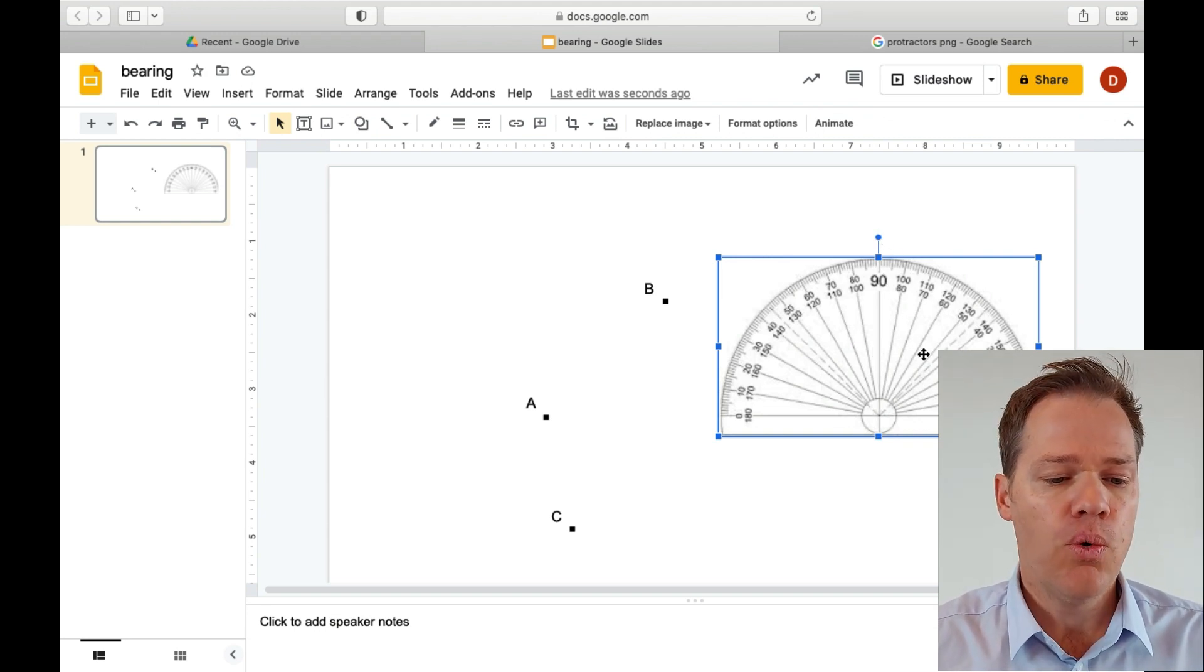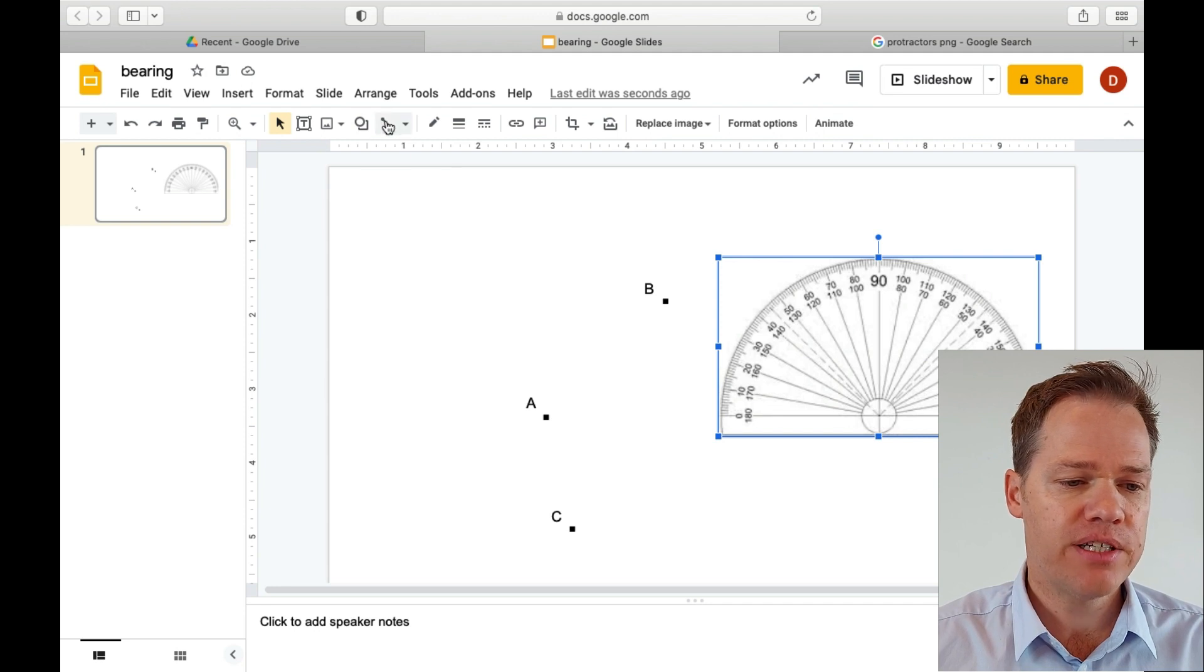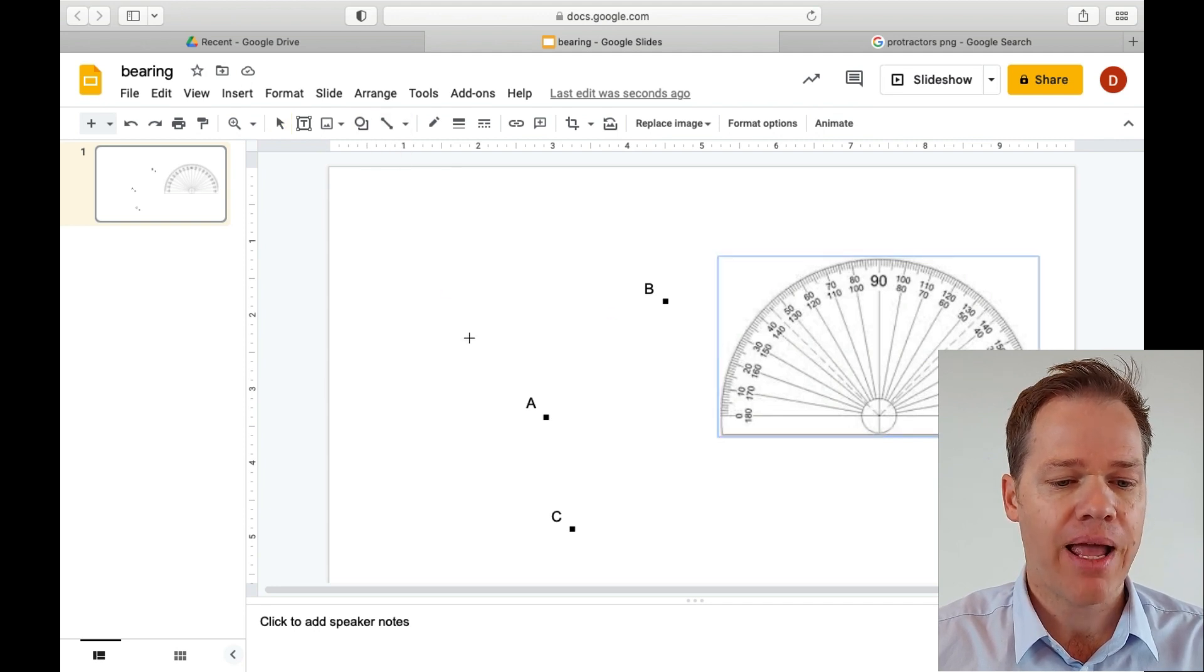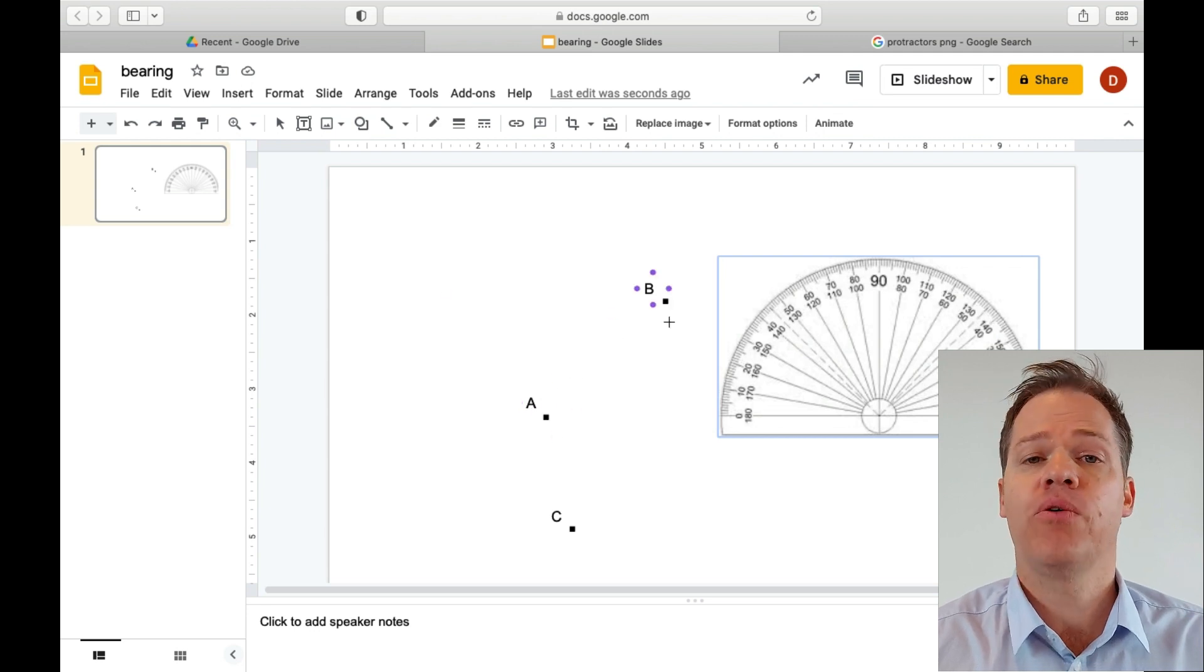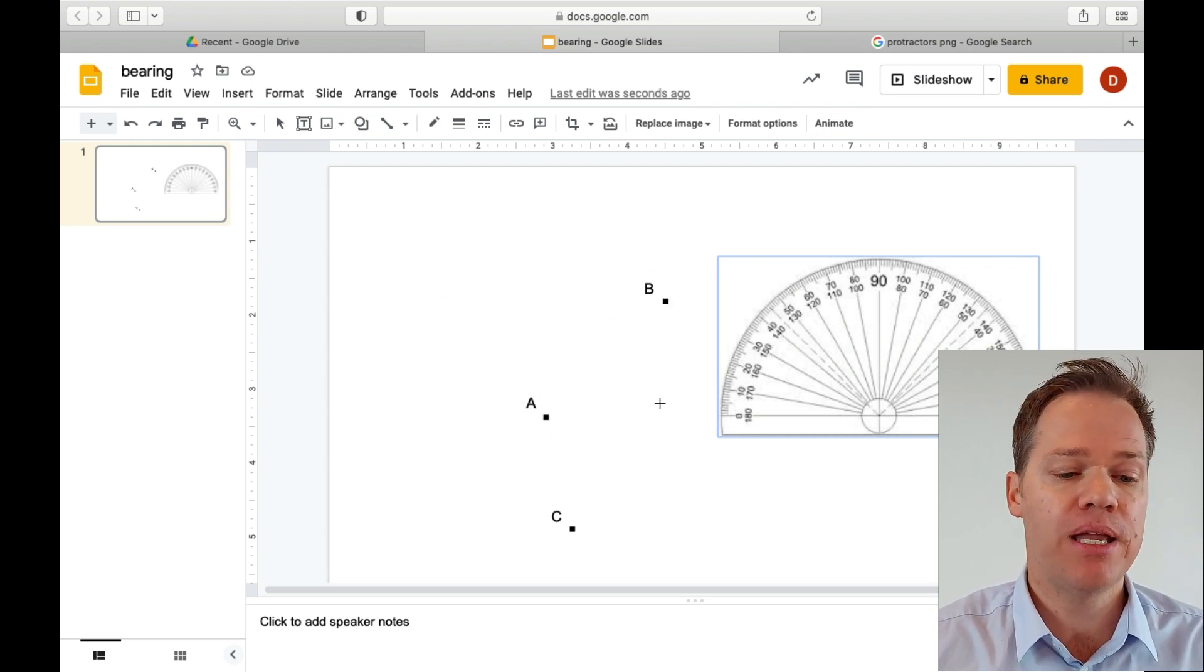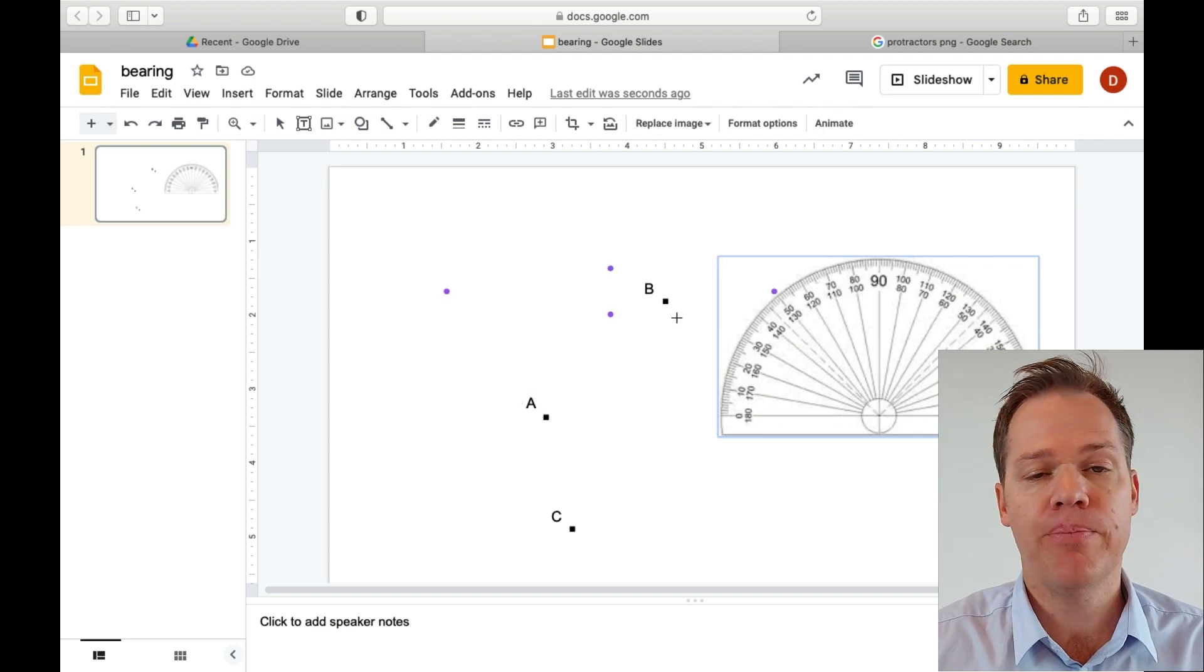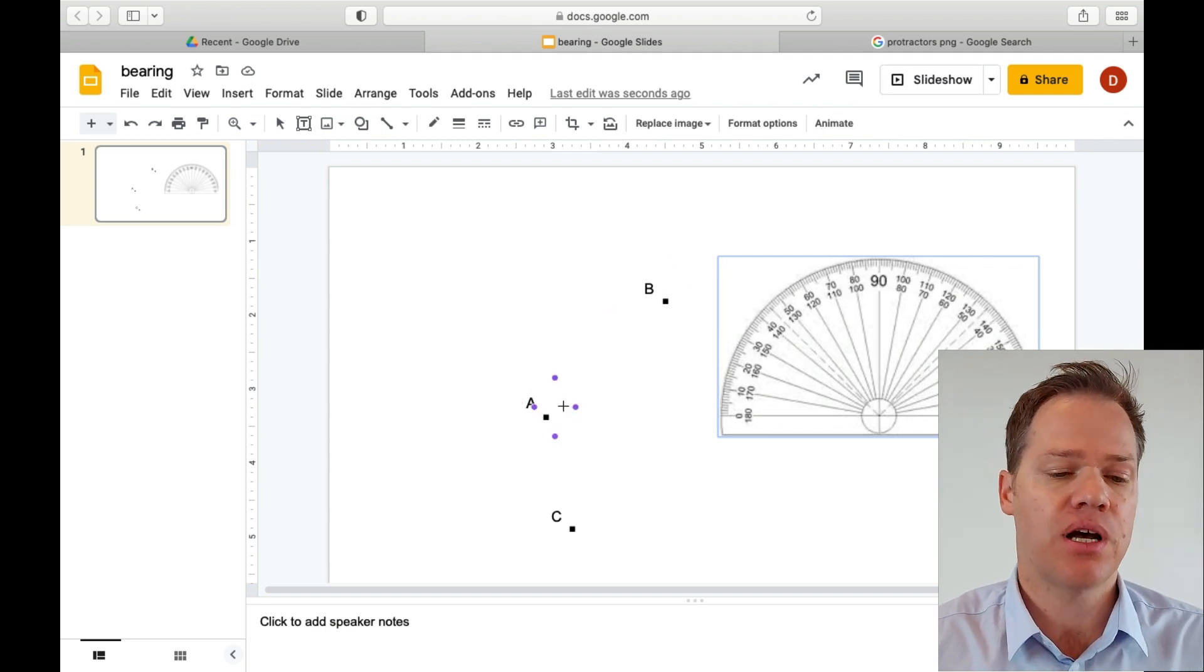So firstly, we need to draw a vertical line upon point A. So we are going to go from point A to point B. In other words, we're going to measure the bearing between point A and point B, and point A is our starting point.